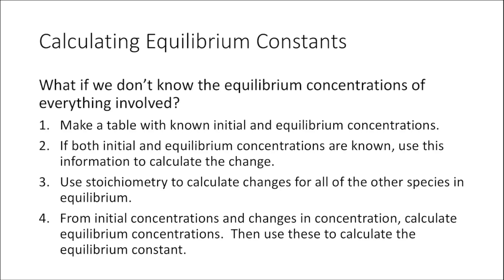If we don't know the equilibrium concentrations of everything involved, we'll start by making a table with known concentrations — typically known initial concentrations and maybe a known equilibrium concentration. If we know both the initial and equilibrium concentration for at least one species, we can calculate the change as the reaction proceeds to equilibrium, then use stoichiometry of the balanced chemical equation to find the changes for all other species, and finally calculate all equilibrium concentrations and the equilibrium constant.